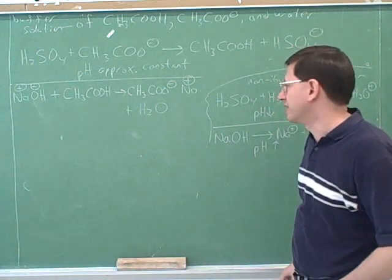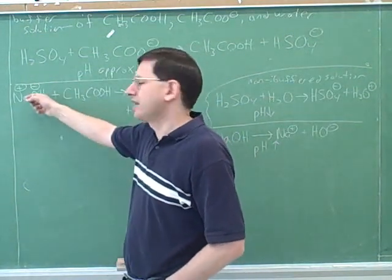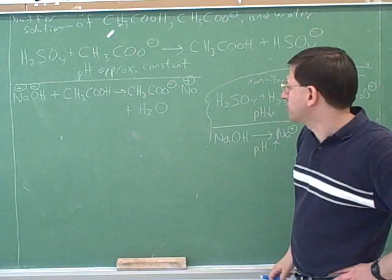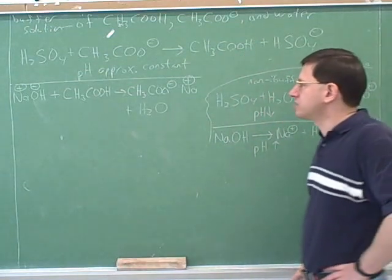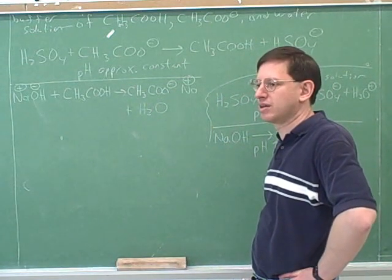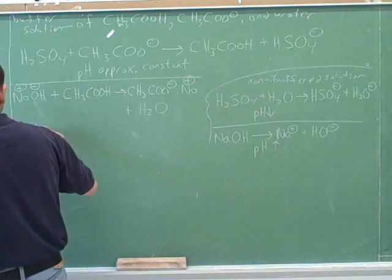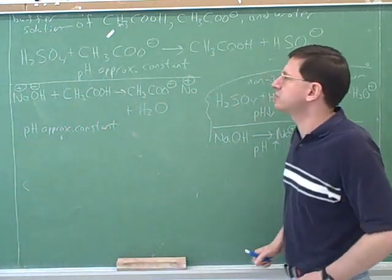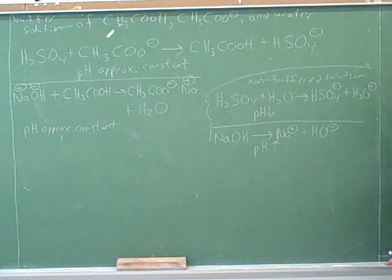So we produced sodium acetate on the right-hand side. The two products are sodium acetate and water. Now, as a result of this reaction, based on what's written on the board, does it look like the pH has gone up, gone down, or stayed the same? It looks like it stayed the same, because it doesn't look like we produced any hydroxide. So again, we would expect the pH is approximately constant, demonstrating how buffers prevent the pH from changing.